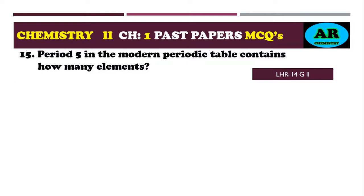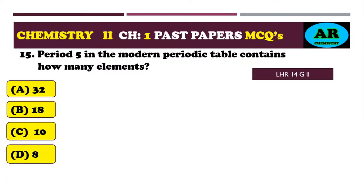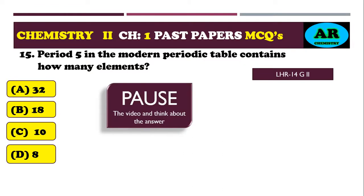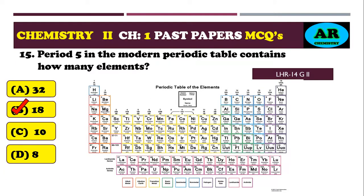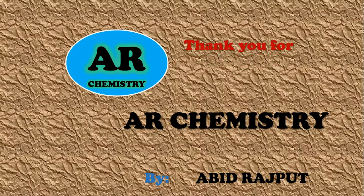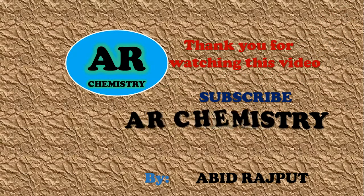MCQ 15: period number 5 in the modern periodic table contains how many elements? Option alpha: 32, option beta: 18, option charlie: 10, option delta: 8. The correct option is beta — 18. Period 5 has 8 normal elements and 10 transition elements, totaling 18 elements. Please subscribe to the AR Chemistry channel for more MCQs.